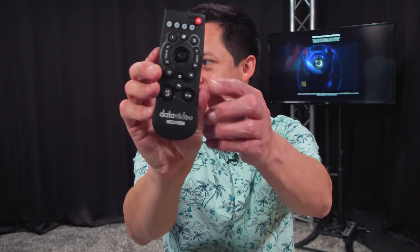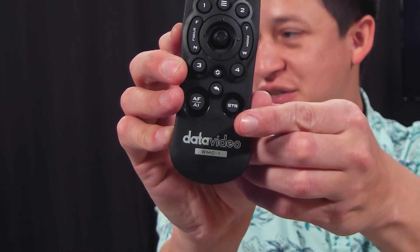You're going to want to press the button that says AF slash AI. So we're just going to hold that down and it says tracking is now on. So now I can move about my stage.